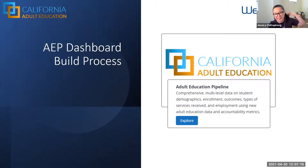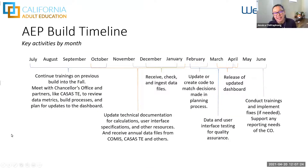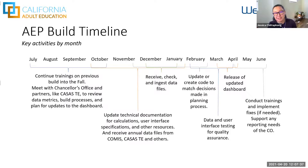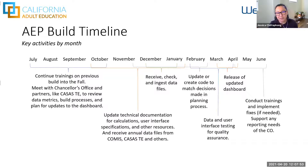One of the things we're trying to do is be very transparent about our processes, so she's going to talk about what goes into the dashboard build process and why we build a new dashboard at least once a year. We've tried to map out the key activities for the adult education build that happens throughout the year. This is a pretty long process — very iterative — and it happens simultaneously with a number of other LaunchBoard data tool builds.